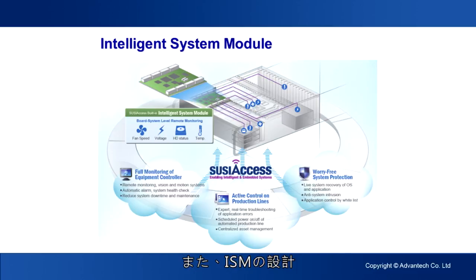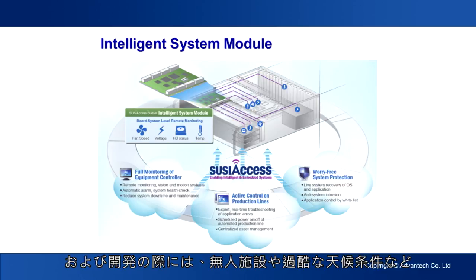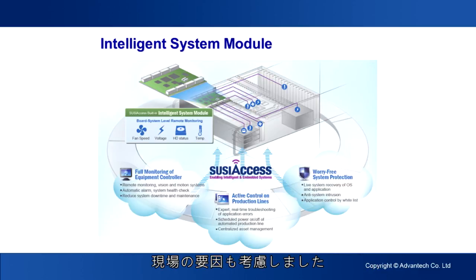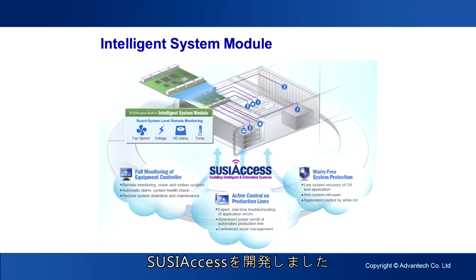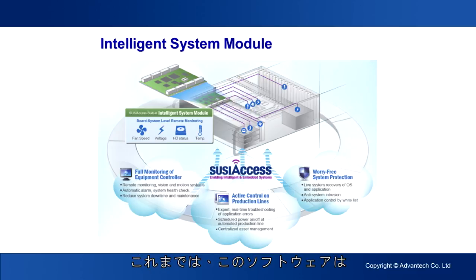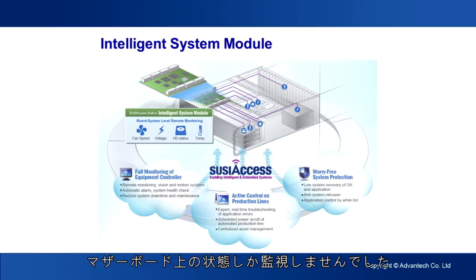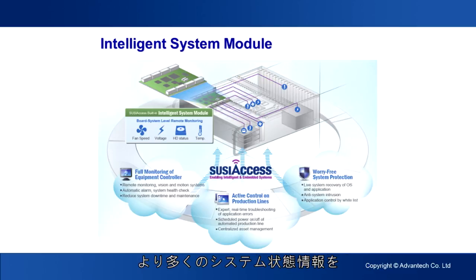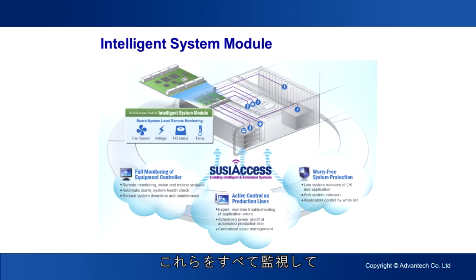During the planning and development of ISM, Advantech also took on-site factors into account such as unmanned facilities and harsh weather environments. We have promoted the system management software SUSIAccess to enable centralized system management and remote data monitoring. Previously, the software only monitored module-level information such as CPU temperature and fan speed, but after combining with ISM it can now provide more system status information — including system temperature, fan speed, voltage, vibration status, and humidity — all monitored for truly intelligent system management.